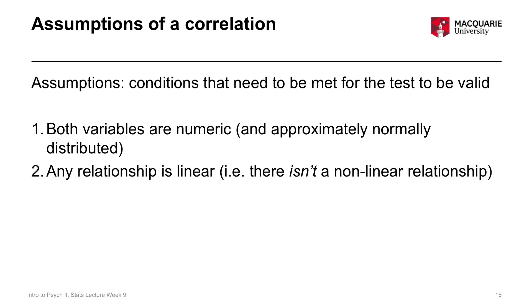The second assumption is that any relationship present is a linear relationship. The scatterplot is really important here because it tells us whether this assumption is met before we run the correlation. The assumption is really about making sure there's no non-linear relationship — if a relationship clearly isn't linear, you need to run a different kind of analysis.